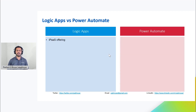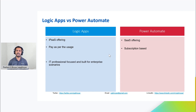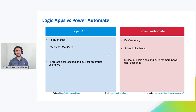When it comes to the offering, Logic Apps is available as an integrated Platform as a Service offering, whereas Power Automate is available as a Software as a Service offering. The licensing model of Logic Apps is very simple — just like anything in Azure, it's based on consumption, so you pay as per usage. Whereas in Power Automate, everything is subscription-based with multiple ways to get a license. The target audience for Logic Apps is IT professionals and it's built for enterprise-led scenarios, whereas Power Automate targets citizen developers or people who prefer low-code, no-code environments.